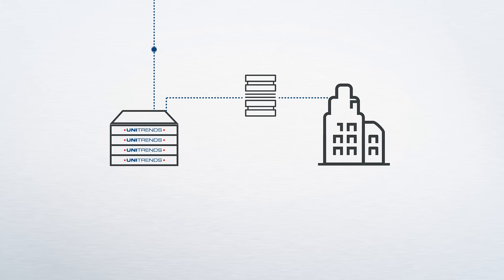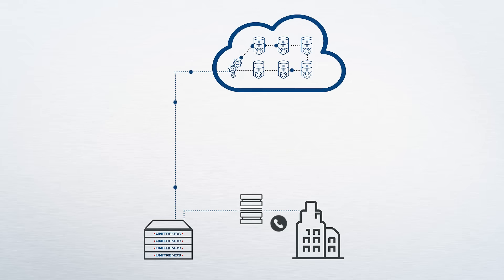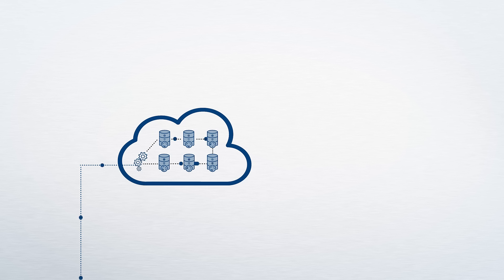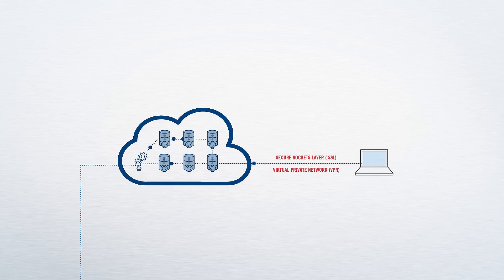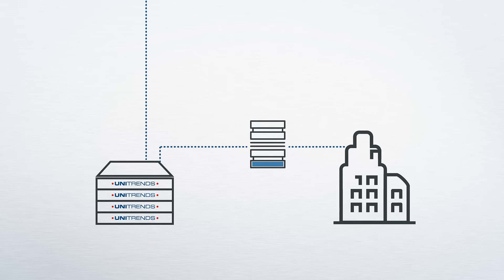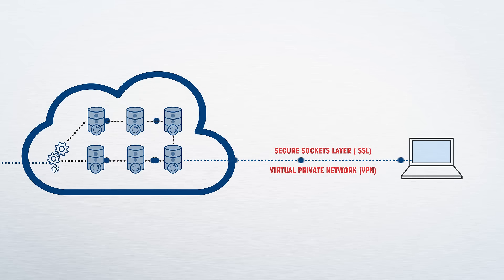If you have a disaster event, simply place one phone call to Unitrends, and your recovery infrastructure is spun up in our cloud. Once your applications are up and running, Unitrends will create and configure an SSL VPN to redirect your users to their business applications already up and running in the Unitrends cloud. Now you have time to rebuild your local infrastructure while your business continues running in the cloud.